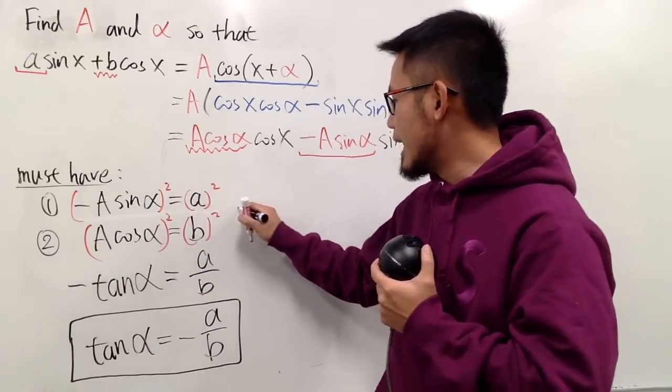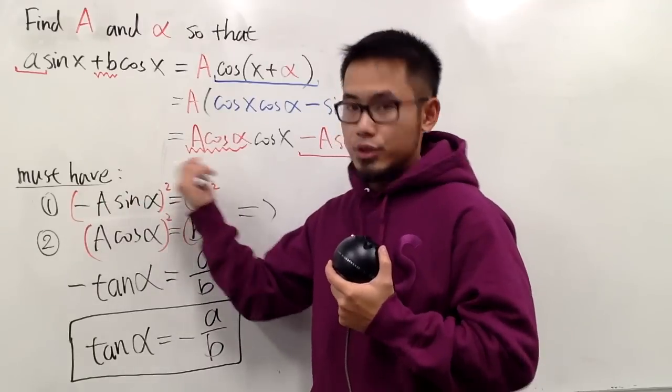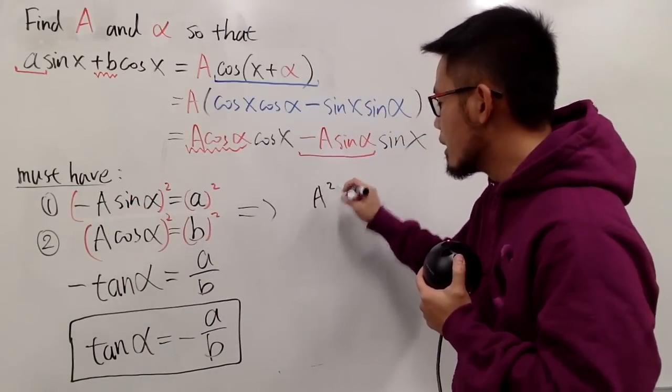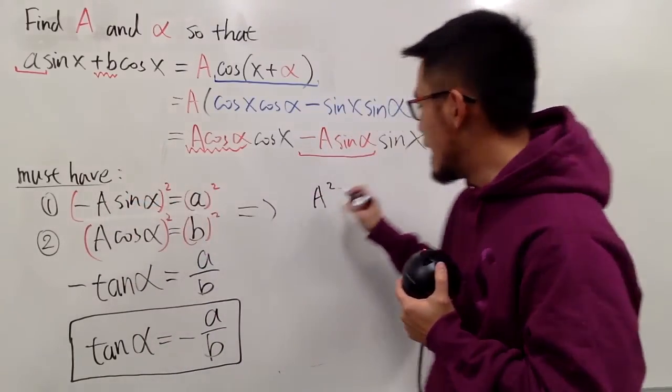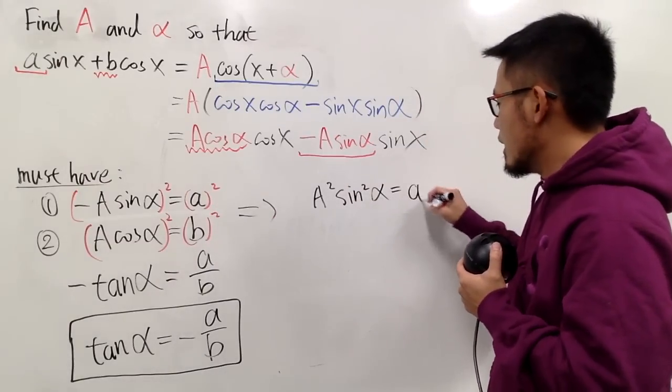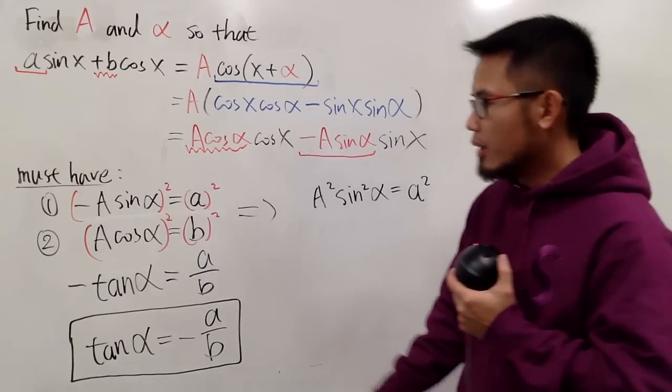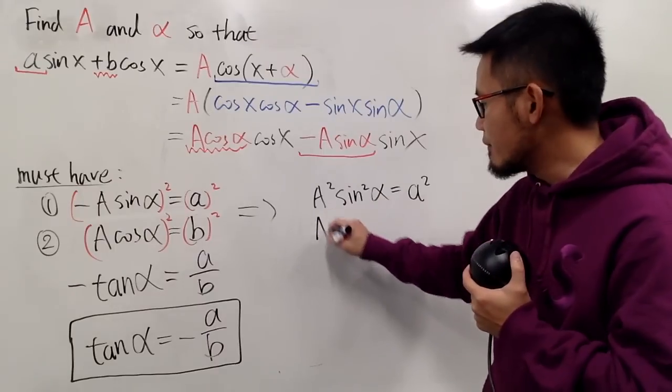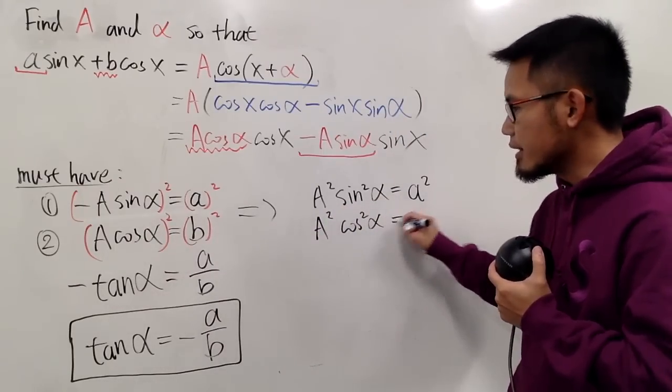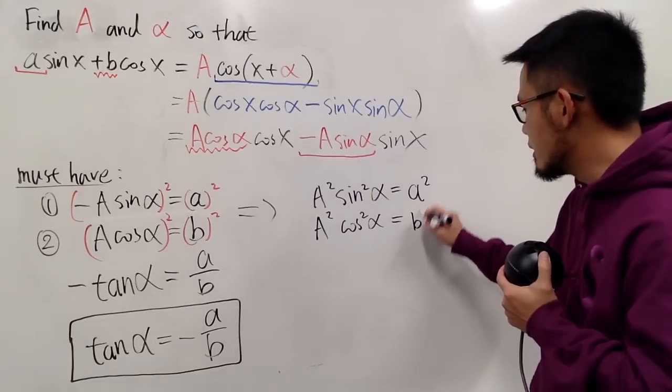And when you do that, you will see negative squared, which is just going to be positive, and we will have A square sine square alpha equal to a square. And on the second equation right here, we will have A square cosine square alpha equal to little b square, like this.